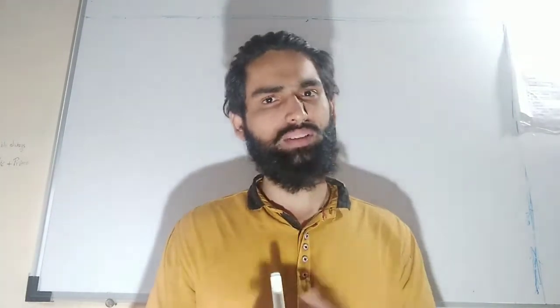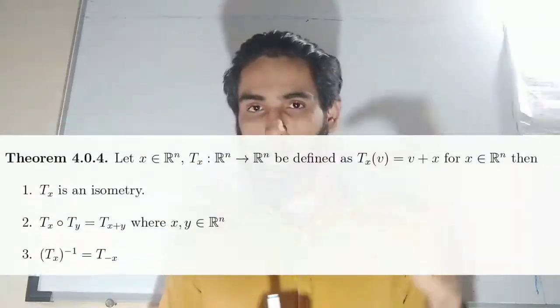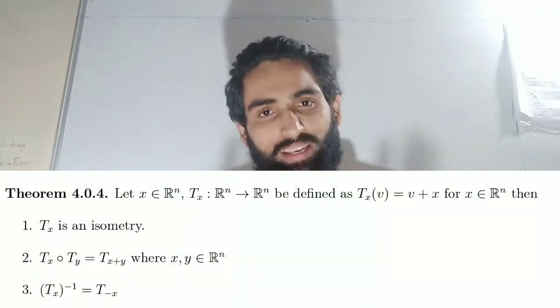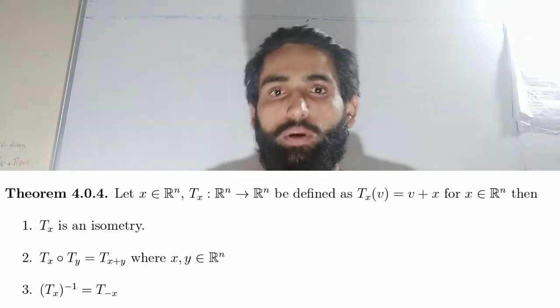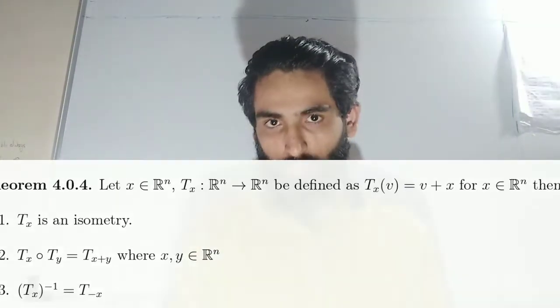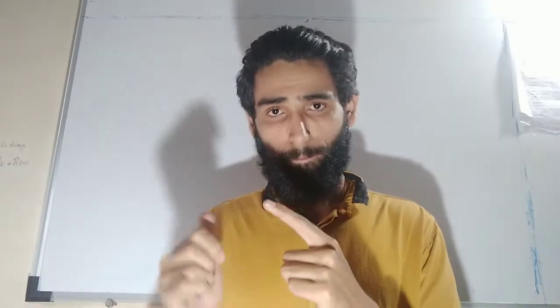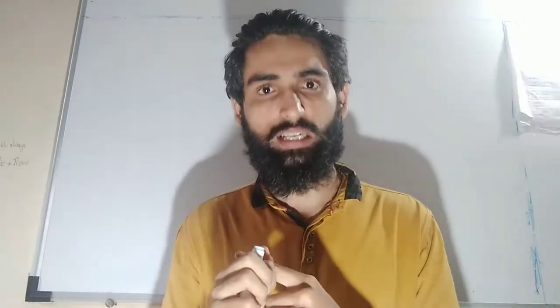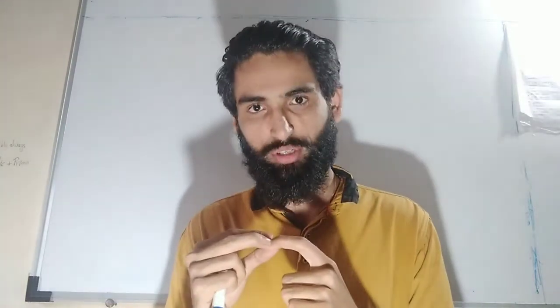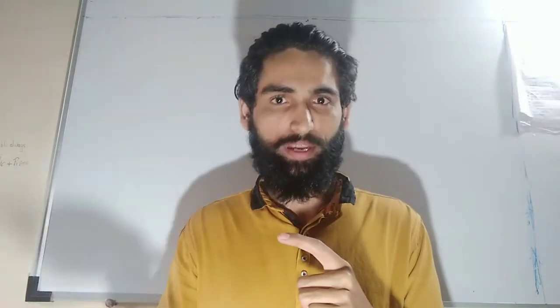Students have to prove this theorem as well; it is a really trivial theorem and by the definition you can prove all three parts. If you are not able to do it, just write in the comment box and my next video will be the proof of these three statements. So till now we know three maps: one is orthogonal transformation, second is an isometry which is a distance-preserving map, and today we learned the translation map. An orthogonal transformation is a linear transformation, an isometry may or may not be a linear transformation, and a translation is not a linear transformation.